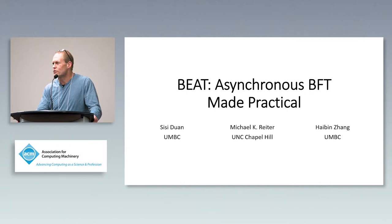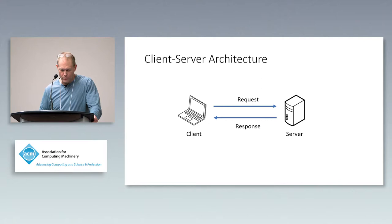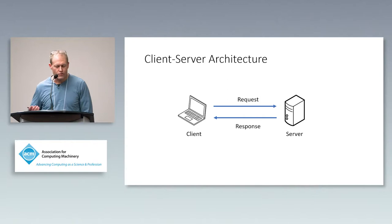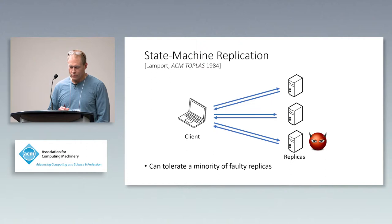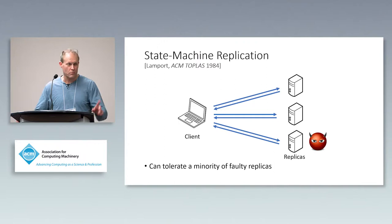What this talk is about is asynchronous Byzantine fault-tolerant protocols, and in particular making them efficient. The backdrop here is client-server architectures, where clients invoke services to get some kind of service. What we're concerned about is the compromise of those servers — when this happens, you can't trust the answers the client is getting. A classic method to deal with this is state machine replication, which goes back before most of you were born.